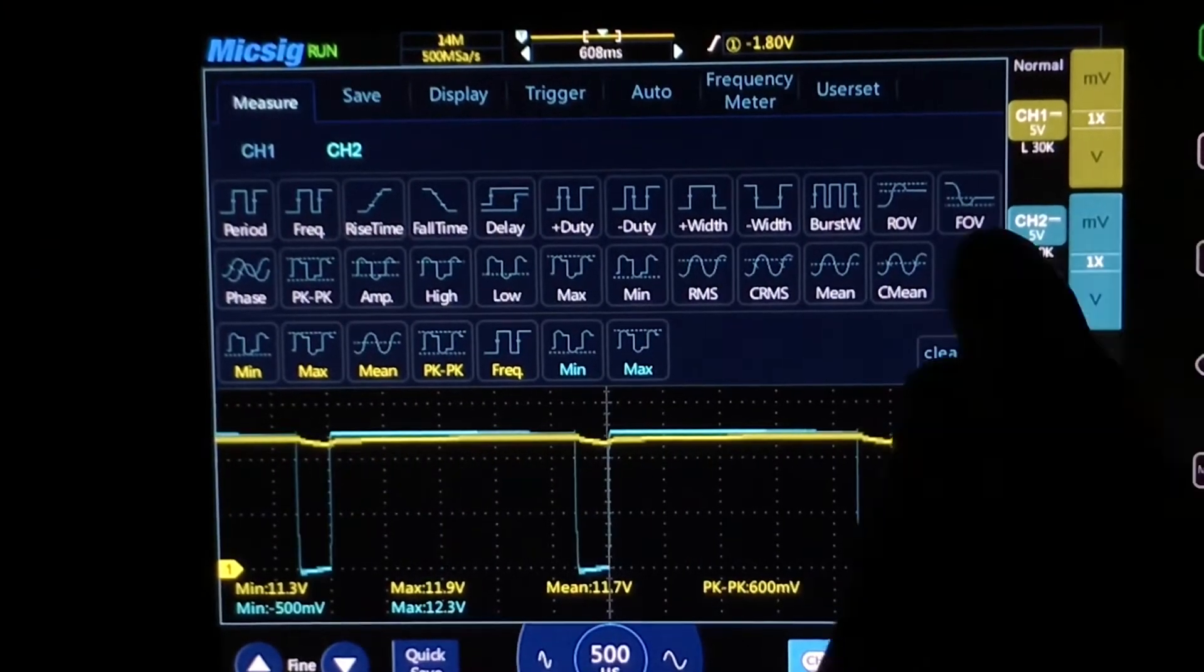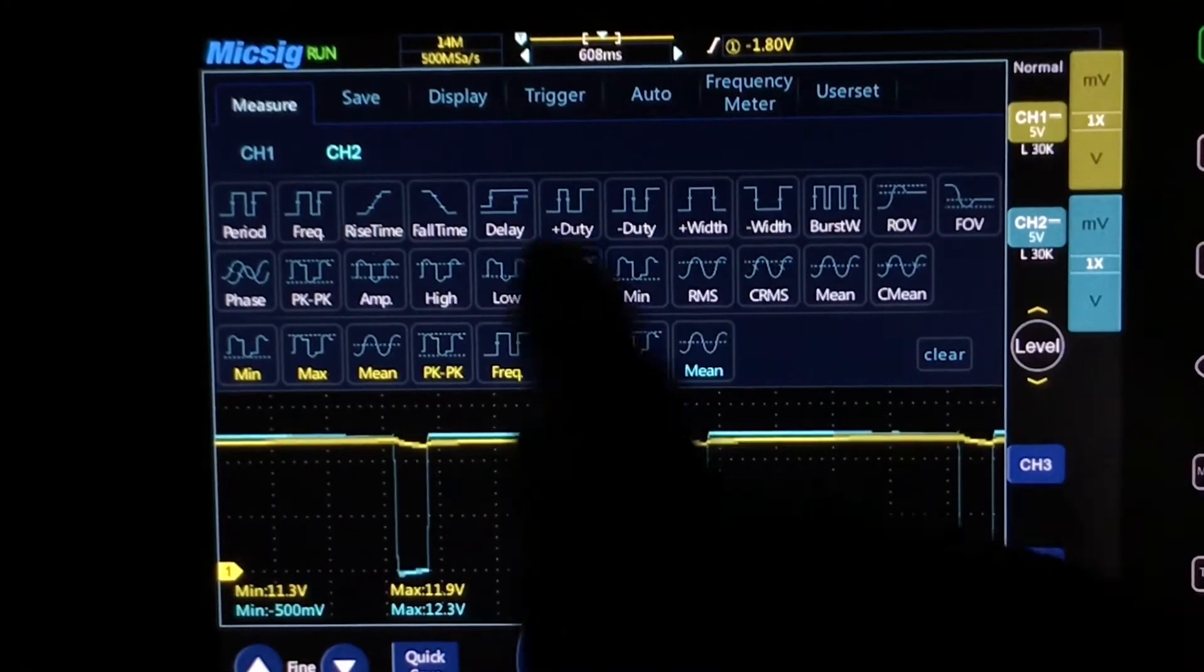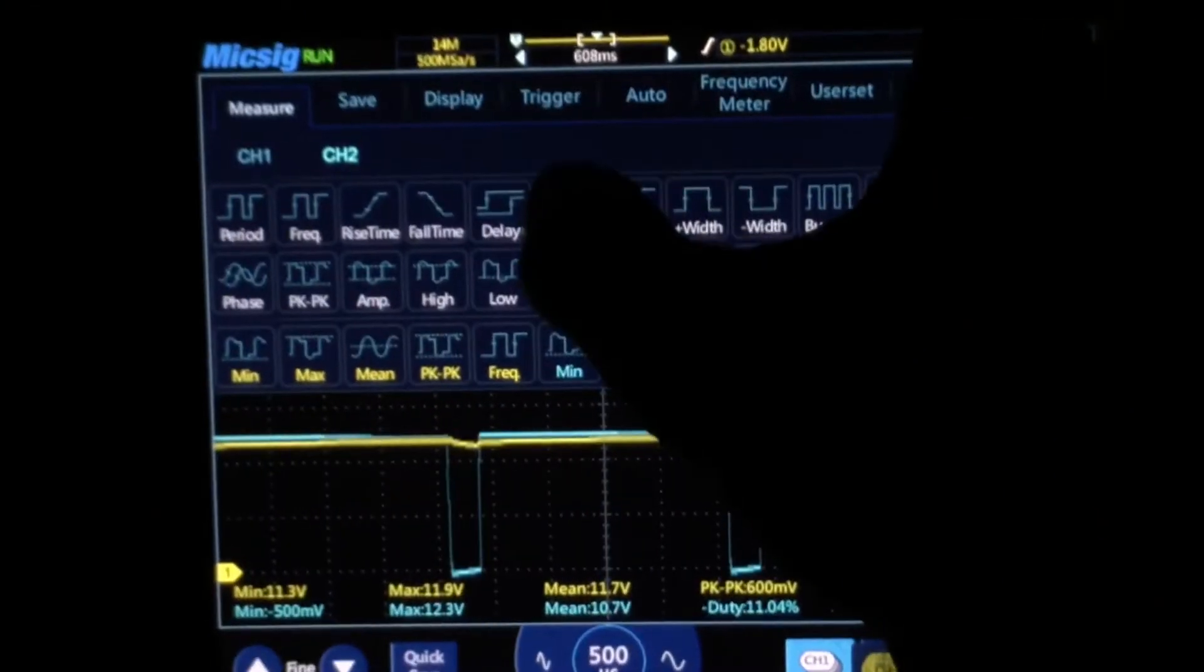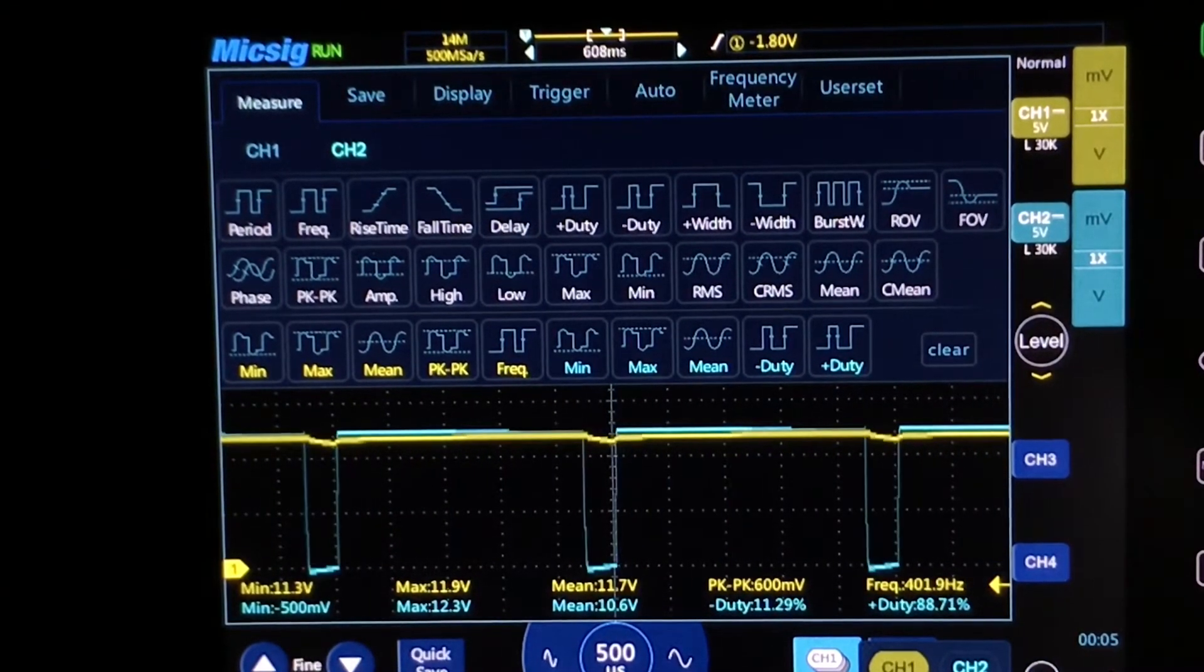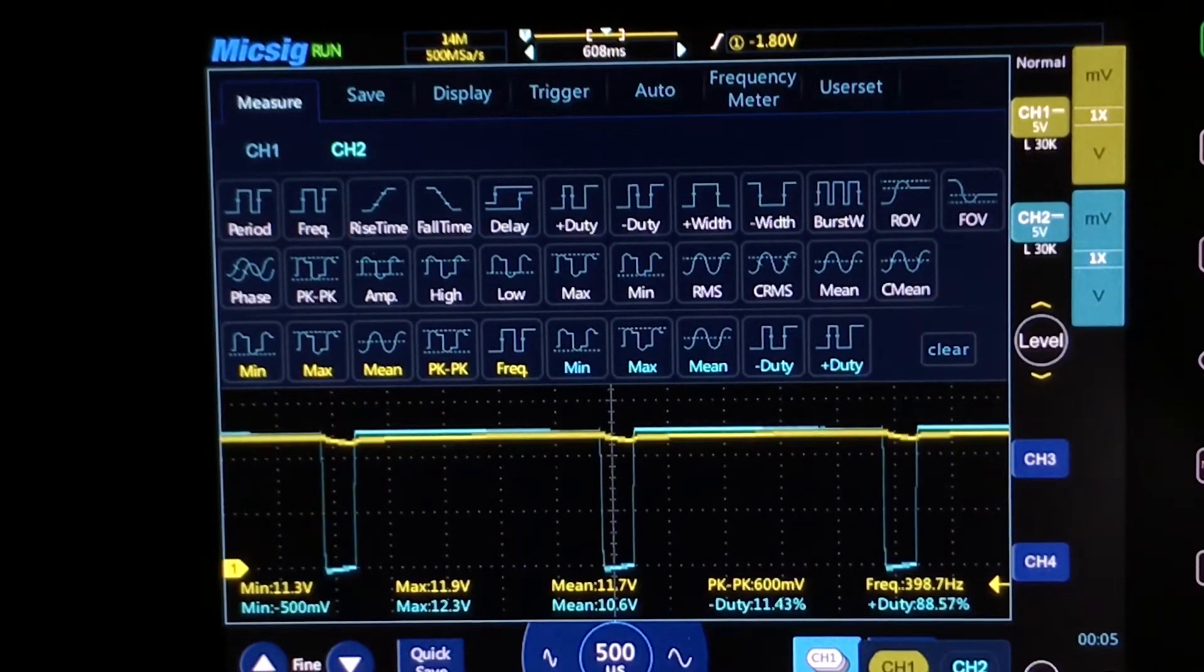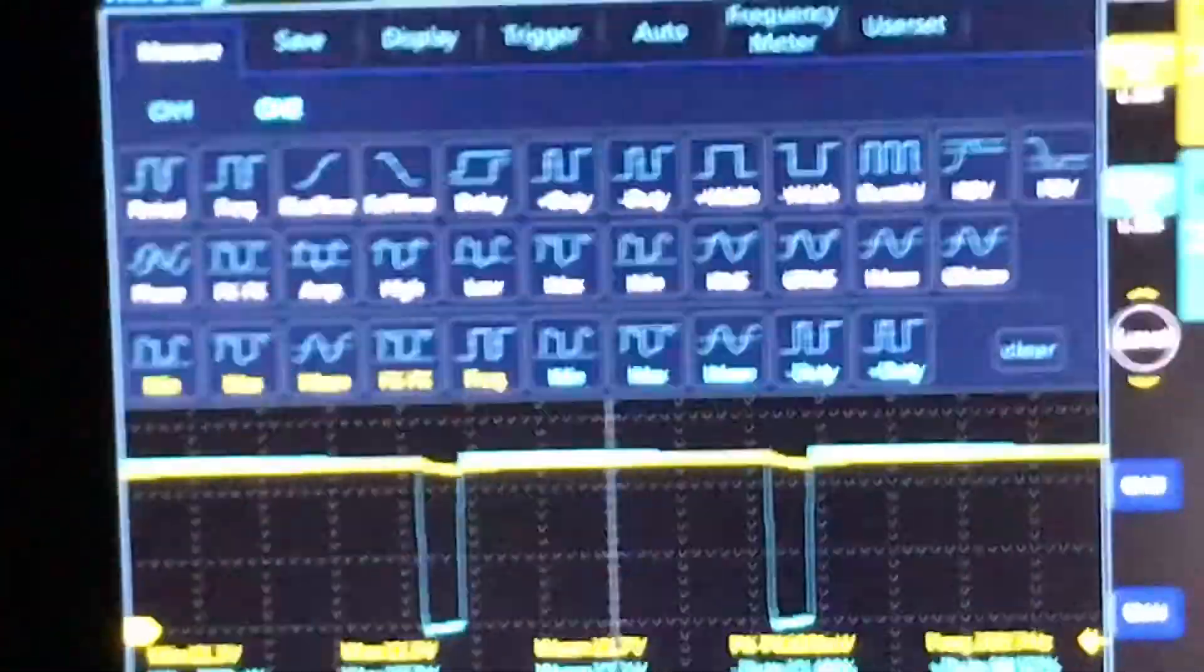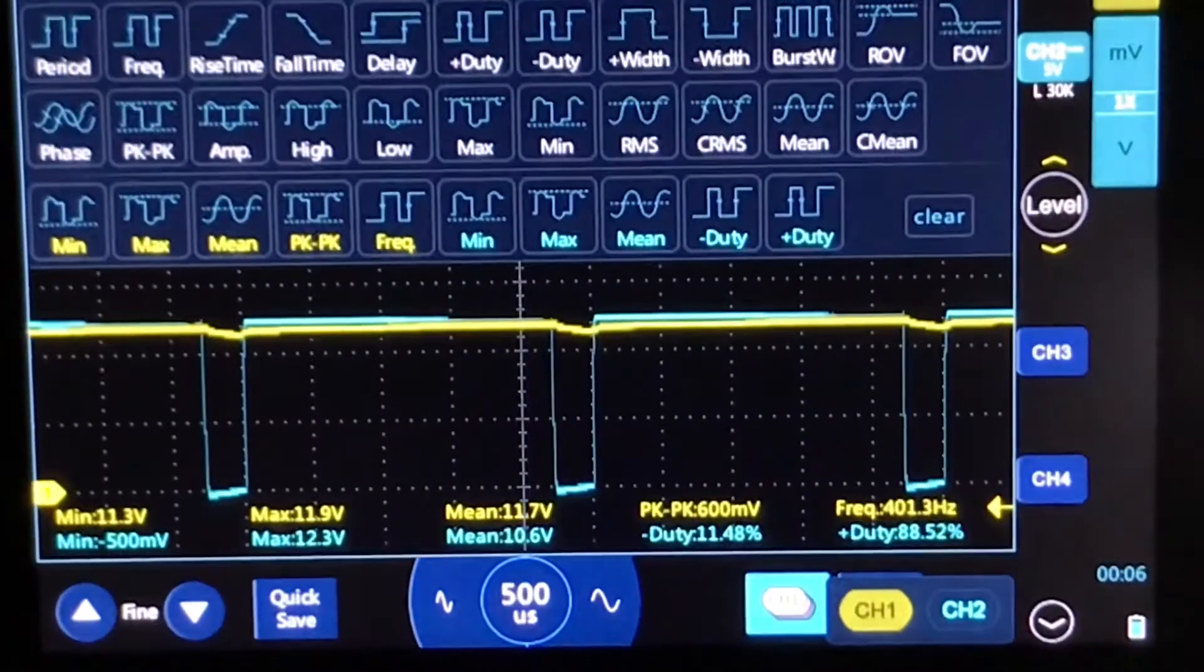Frequency, there we go. Now channel two, min-max, minimum-maximum. I like doing a duty cycle. Let's do duty cycle, negative and positive. Hey, when I push a button and it doesn't acknowledge it. So there we go. You can see it fluctuating. It's being pulled to ground 11 percent of the time and being pulled to power about 88 percent of the time. Can you all see that? There we go.